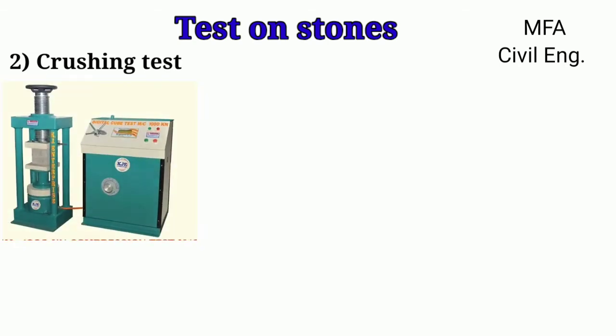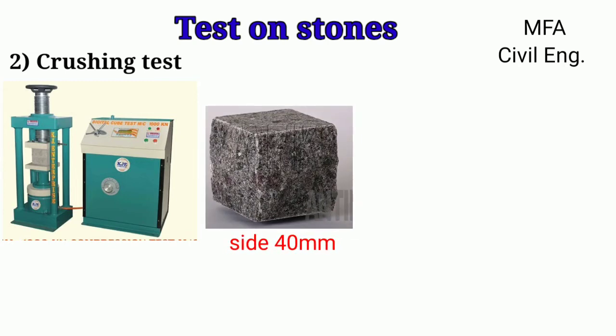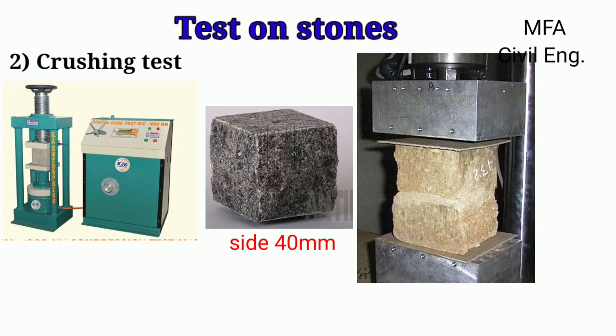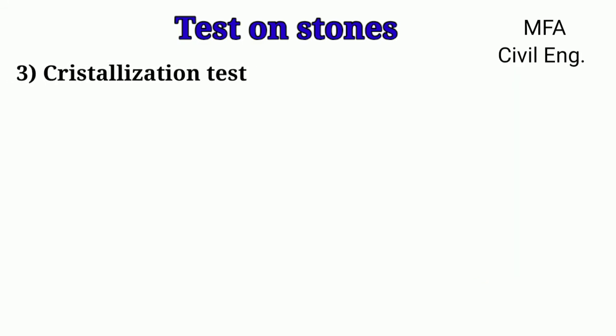Crushing test: This test is used to find out the compressive strength of the stone. The sample of stone is cut into a cube having a dimension of 40 mm on each side, finely dressed and finished. The cubes are placed in water for about 72 hours prior to testing and then tested in a saturated condition. A 5 mm thick plywood or plaster of Paris is applied on the load-bearing surface. The load is applied axially at the rate of 13.72 Newton per mm² per minute. The crushing strength per unit area equals the maximum load at which the sample fails divided by the area of the bearing surface.